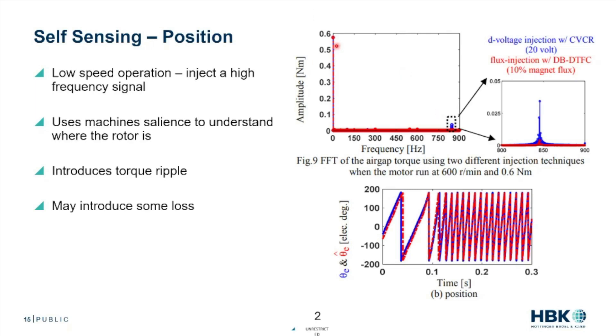In my graph on the right, we have the amplitude of current and the frequency, or I guess this is d-axis voltage. So we have the amplitude of the d-axis voltage and then the frequency. And we can see that we inject an 850 hertz signal.